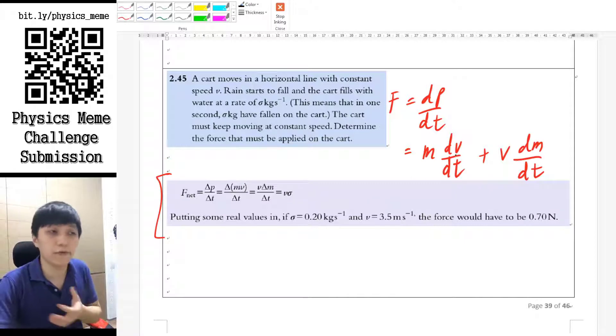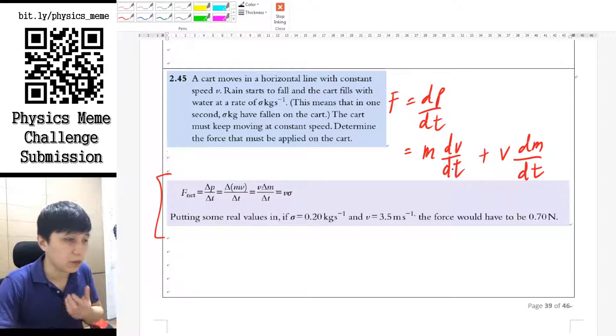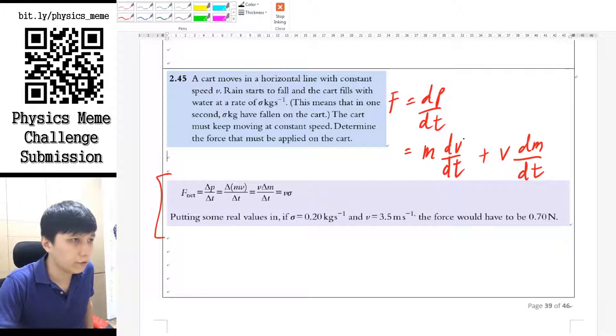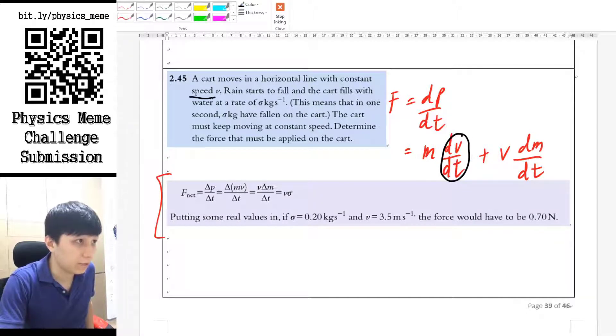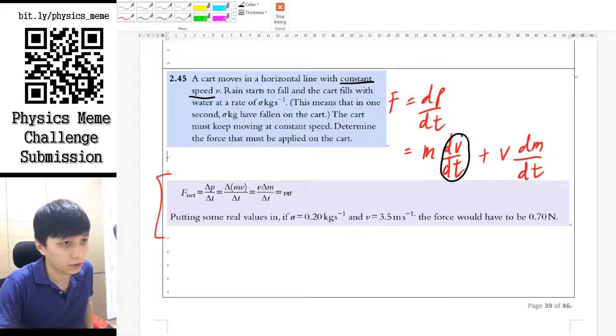I do think this can give you a more holistic view of what is happening in physics here. So first of all, if you look at dv over dt, and the question said the speed or velocity is constant, then in this case you should know it is zero because a change of v is zero when this is constant.